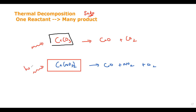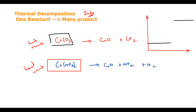Thermal decomposition is always endothermic — you have to supply heat energy, and heat energy is taken in. On the energy profile diagram, the reactant particles have lower energy and the products have higher energy. Endothermic reactions always have the energy of the reactant lower than the energy of the product, and the minimum energy at which the reaction starts is called the activation energy.